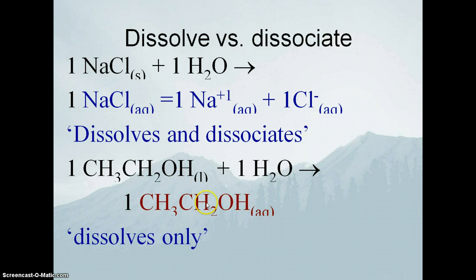Even though we'll write NaCl sub AQ and ethanol AQ, one of these actually dissociates and falls into ions and the other one doesn't. How are we going to know that? You're going to learn the rules for what dissociates, and you're going to learn them relatively soon.